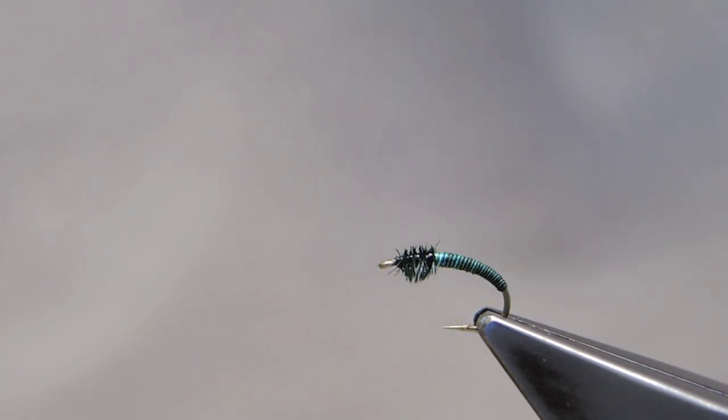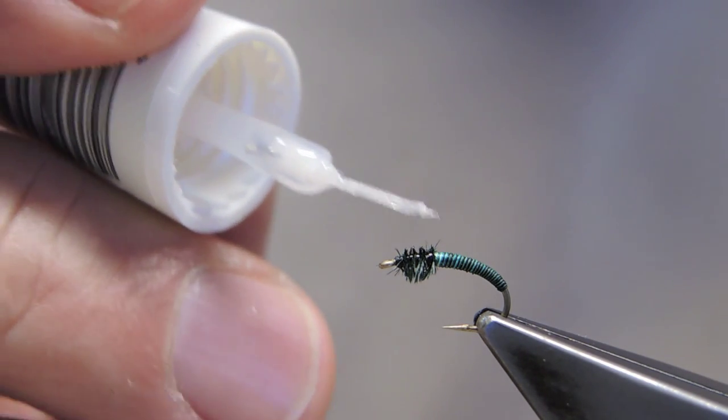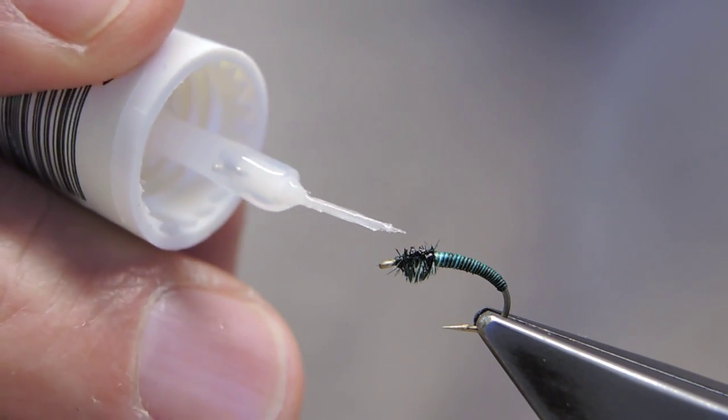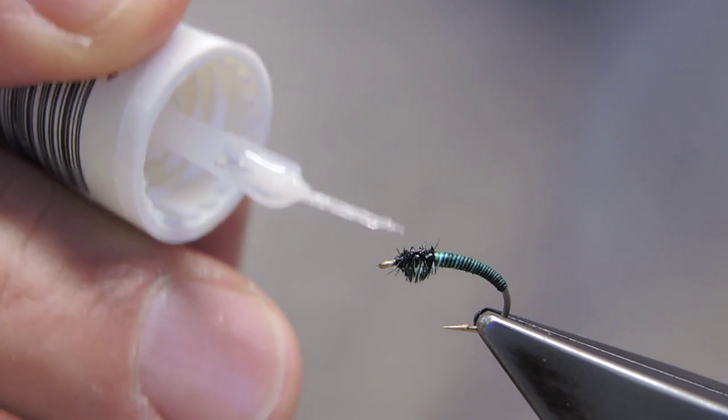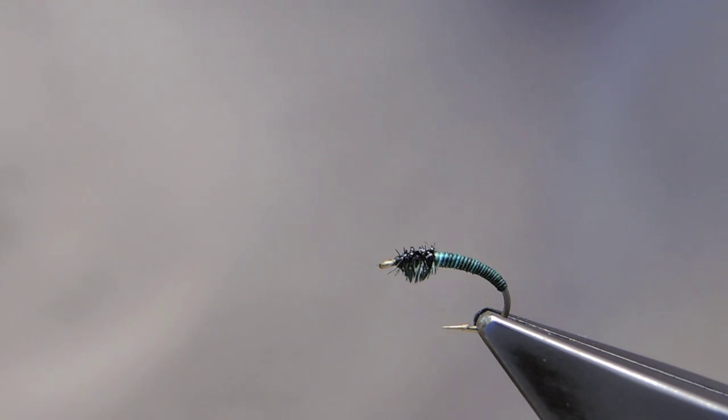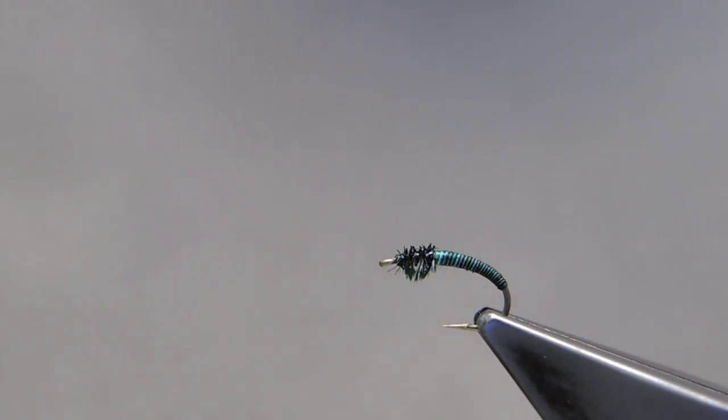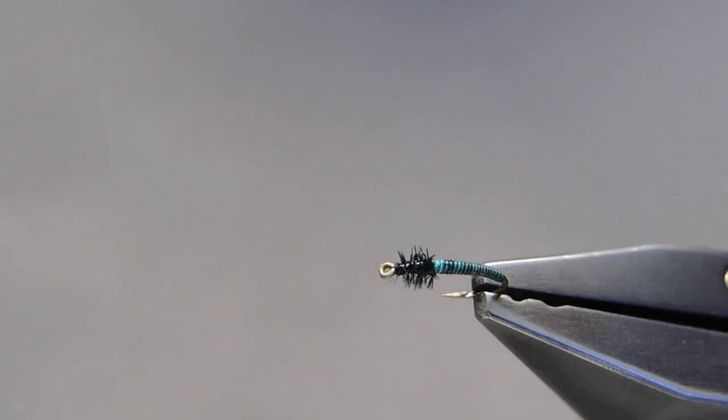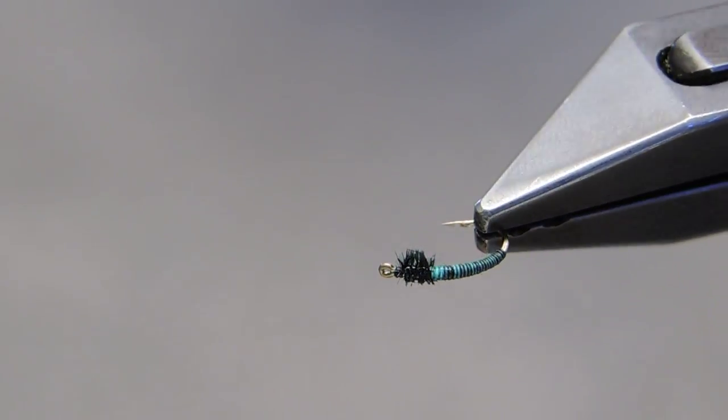And a small amount of thin varnish is placed on top. Just a very tiny amount. That completes A.K. Best's Caddis Quill Larva.